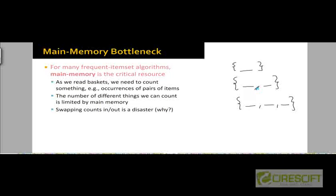When we are keeping track of pairs of items generated from each basket, we have to count how many such pairs we have seen so far for all possible pairs. To keep track of this count, we have to ensure that the number of such pairs is small enough that the counts can be maintained in main memory. As we parse through the file, we need to count occurrences of individual items, pairs of items, triples, and so on, and the number of different things we can keep count of is limited by the amount of main memory we have.